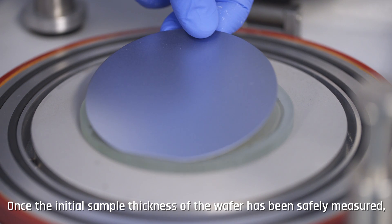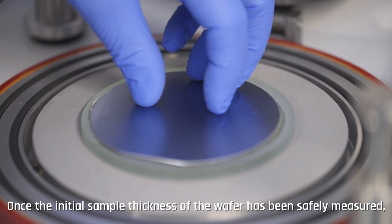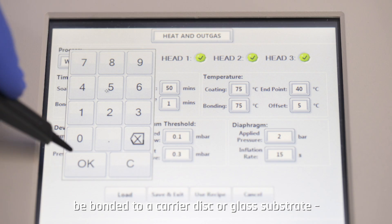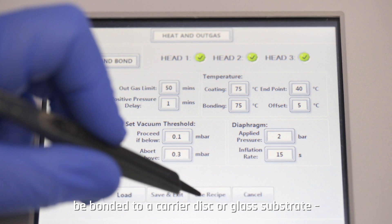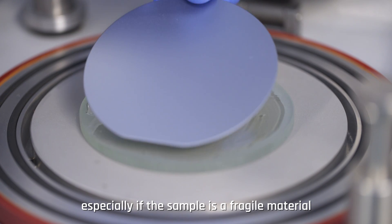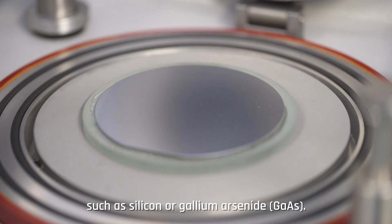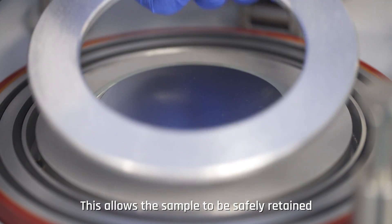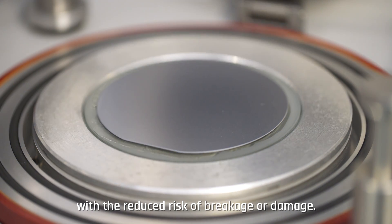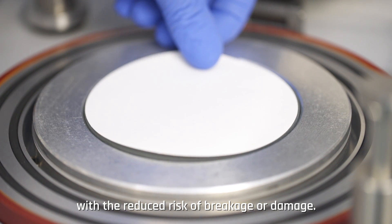Once the initial sample thickness of the wafer has been safely measured, it is then important that the sample be bonded to a carrier disc or glass substrate, especially if the sample is a fragile material such as silicon or gallium arsenide. This allows the sample to be safely retained throughout the lapping and polishing processes with the reduced risk of breakage or damage.